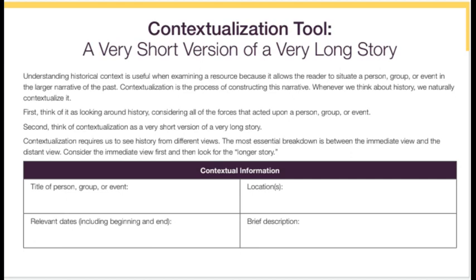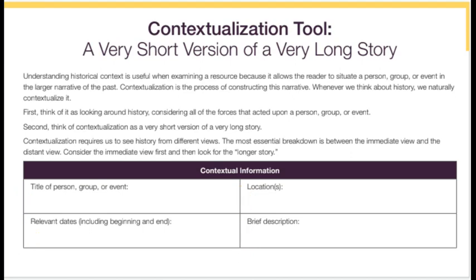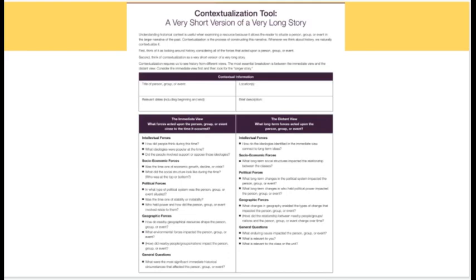Step one: first and foremost, you're going to look at the title of the person, group, or event — whatever the source gives you. Next, look for any relevant dates — beginning and middle — any date you need to know, location, and a brief description of what the source is talking about. Basically, you're telling us where your source comes in.